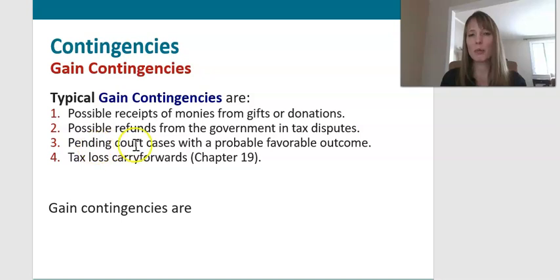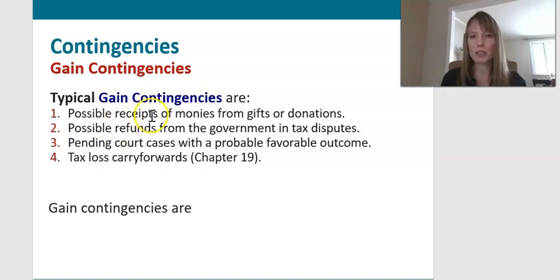A gain contingency could be a pending court case with a probable favorable outcome — we think we're likely to win and get some cash in the future. Maybe we're expecting to receive a refund from the IRS, or perhaps someone promised us a gift or donation that we would receive in the future.